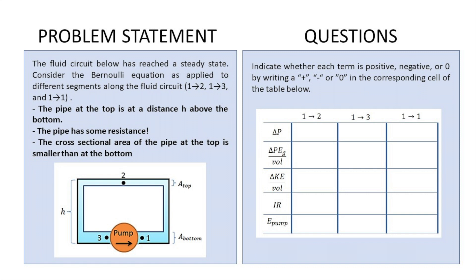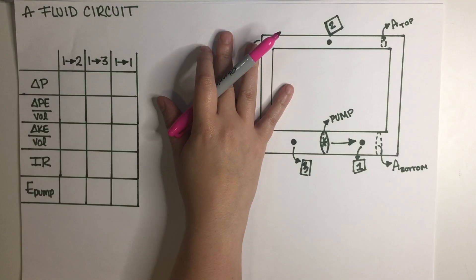So this is a final exam question and the problem statement goes as follows. The fluid circuit below has reached a steady state. Consider the Bernoulli equation as applied to different segments along the fluid circuit and they're giving us three points: one, two, and three. The pipe at the top is at a distance h above the bottom. The pipe has some resistance. The cross-sectional area of the pipe at the top is smaller than at the bottom. As you can see I have everything written down over here.